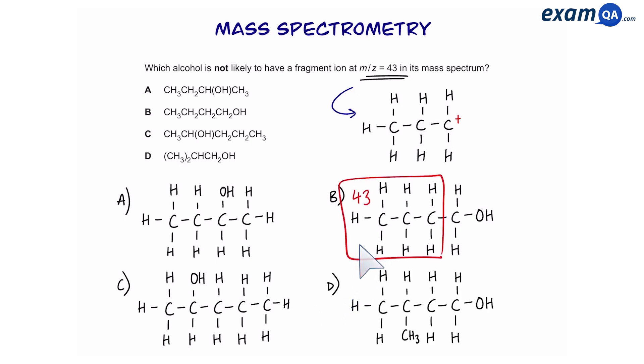So, we can see that alcohol B can form an ion with a value of 43. So can alcohol C and so can alcohol D. Meaning that the answer should be alcohol A. It is the only one that does not form any fragment with a value of 43.